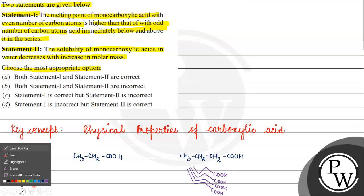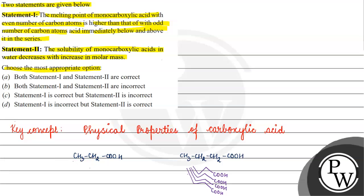Compared to the odd number of carbon atoms, even-carbon acids will be well stacked, but odd-carbon acids will not be well stacked. That's why the melting point of even number of carbon atoms is more compared to the odd number. So Statement 1 is correct.